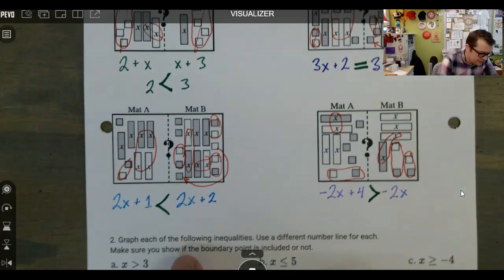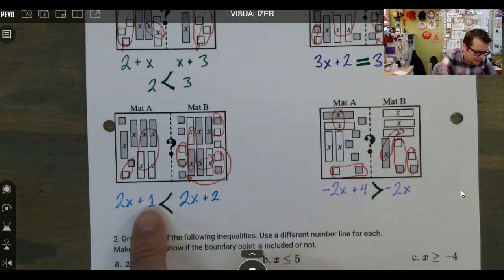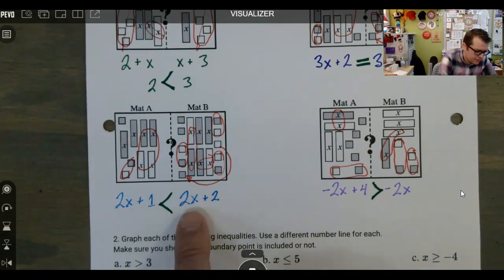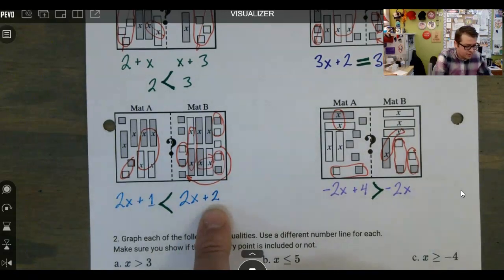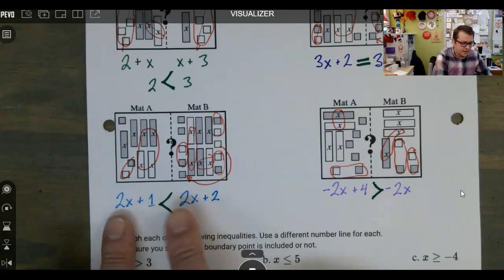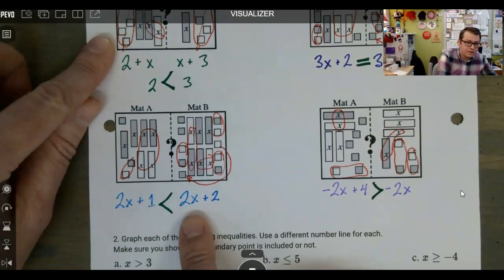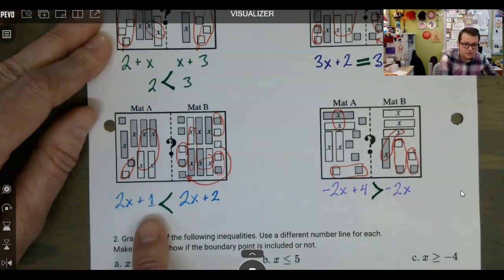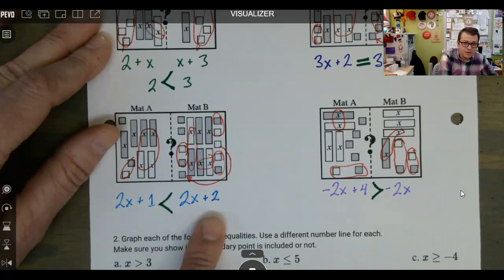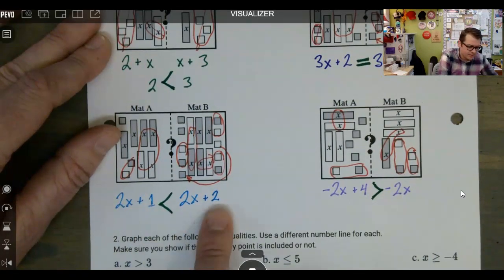In the third one here, it looks like we get down to 2X with a positive one leftover and 2X with a positive two leftover. So since we have 2X on both sides, just like the first one that we did up here, we can get rid of that from both and we could effectively just compare one to two and one is less than two.